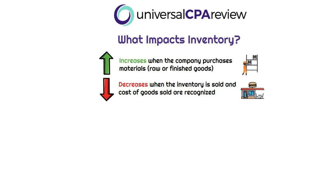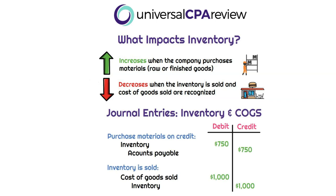Let's understand what would increase or decrease inventory. Inventory is increased when we purchase materials from a third-party vendor — that can be raw materials or finished goods. Inventory is decreased on the balance sheet when we actually sell the item and recognize cost of goods sold. Looking at the journal entries: when we purchase materials on credit, the entry is a debit to inventory and a credit to accounts payable. When inventory is sold, we debit cost of goods sold and credit inventory.